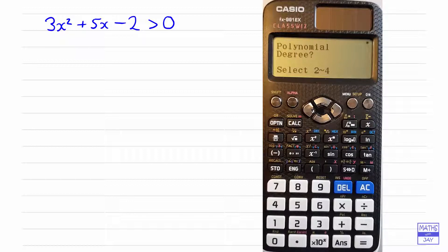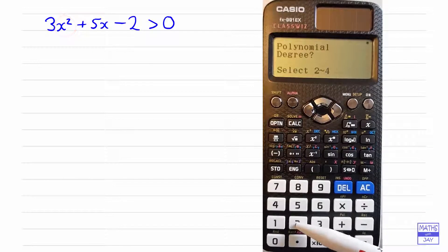And then this is asking us for the degree of the polynomial. So what that is saying is what is the biggest power of x? So here we've got a quadratic, the biggest power of x is 2, so we're going to select 2.